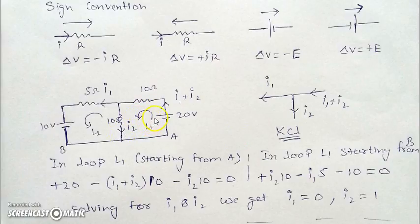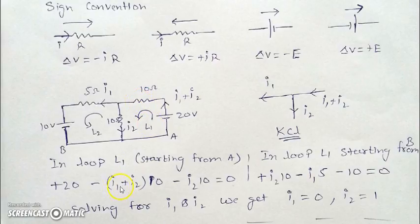For loop 1, we move in an anti-clockwise direction starting from point A. First, we jump the battery from its negative to positive terminal, giving plus 20. Moving in the direction of current through the 10 ohm resistance gives minus I2 times 10. Crossing the next resistance in the direction of current gives minus I2 times R. We return to point A, so the total equals zero.